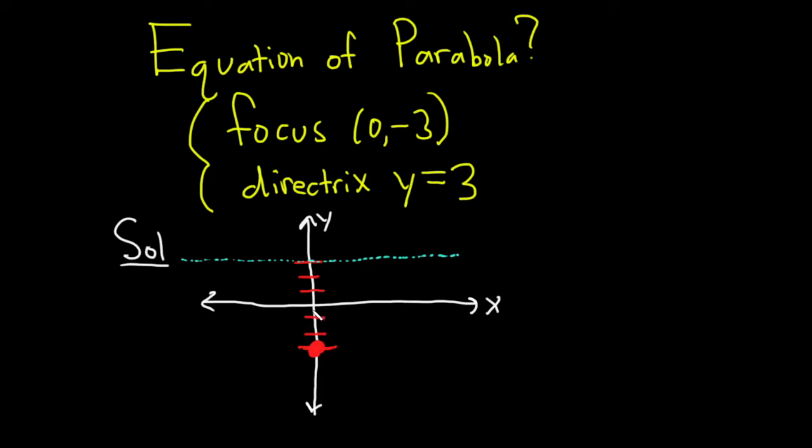Based off of this information, we can find the vertex because the vertex is equidistant from the directrix and the focus, meaning that it's an equal distance from both.